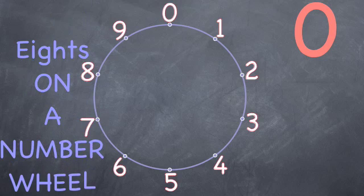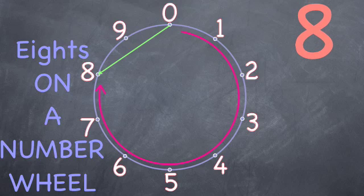So now let's look at what the eights do. Going around 8 on the wheel gets the same place as going back 2. Can you see that?